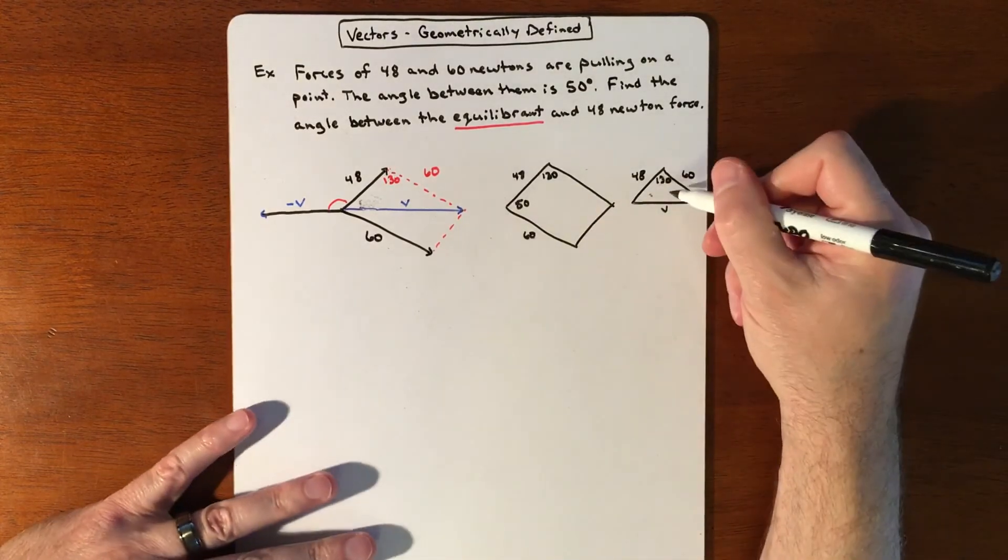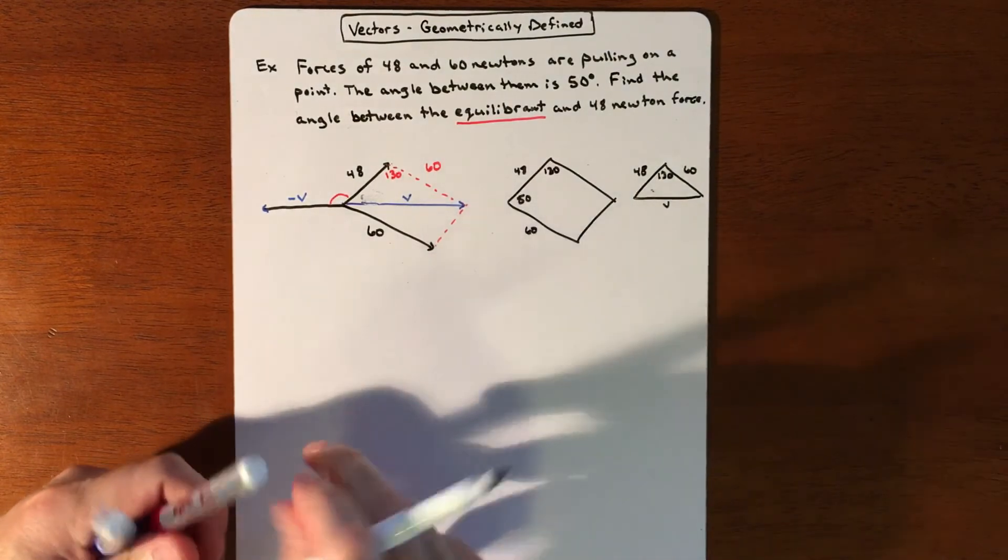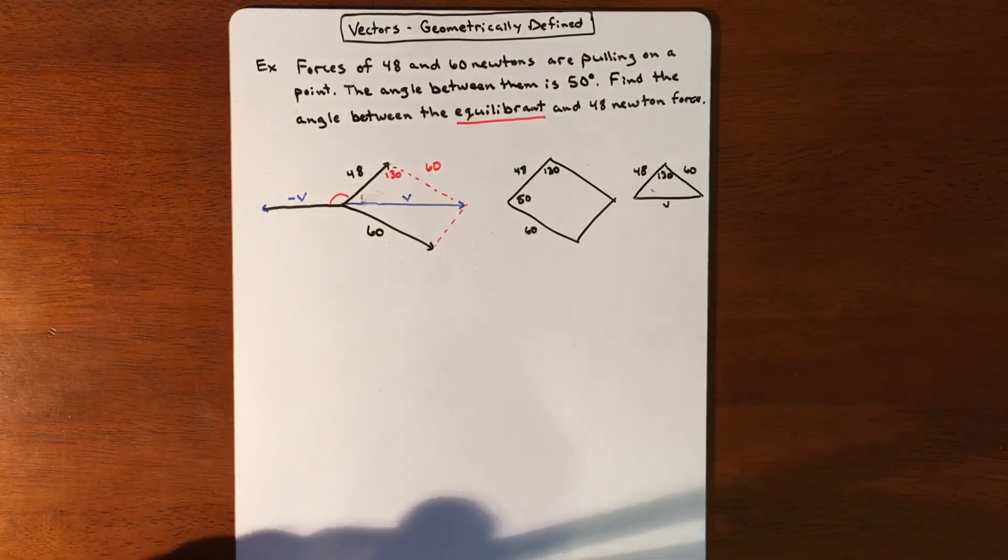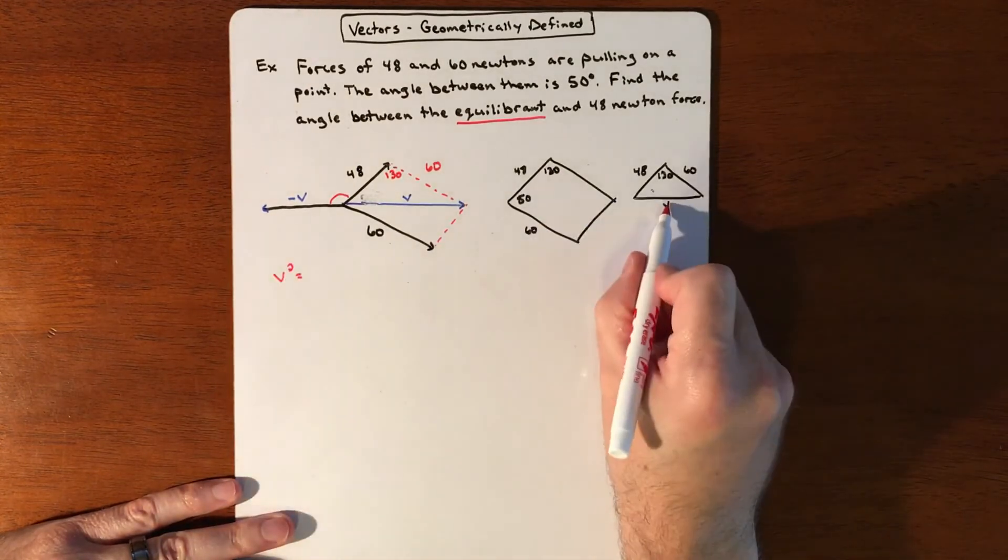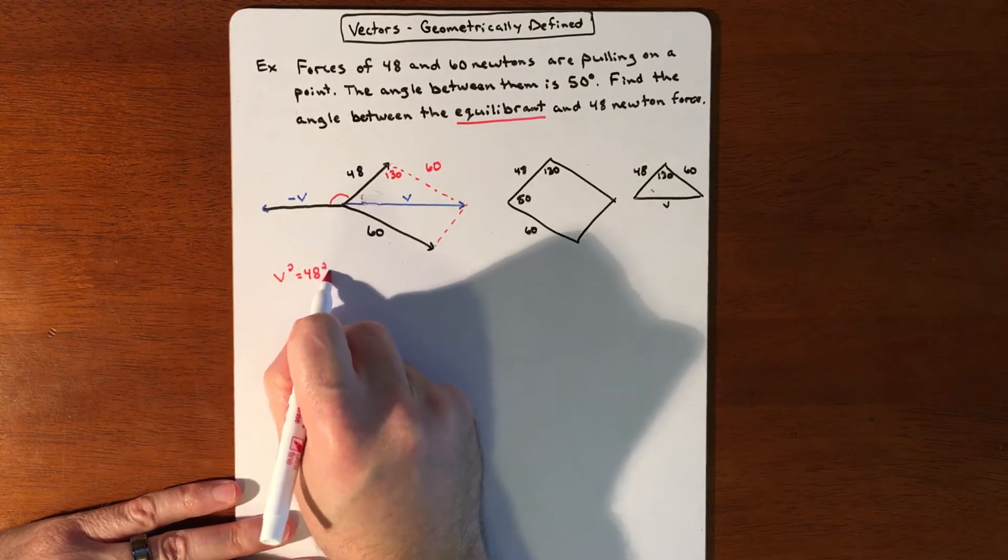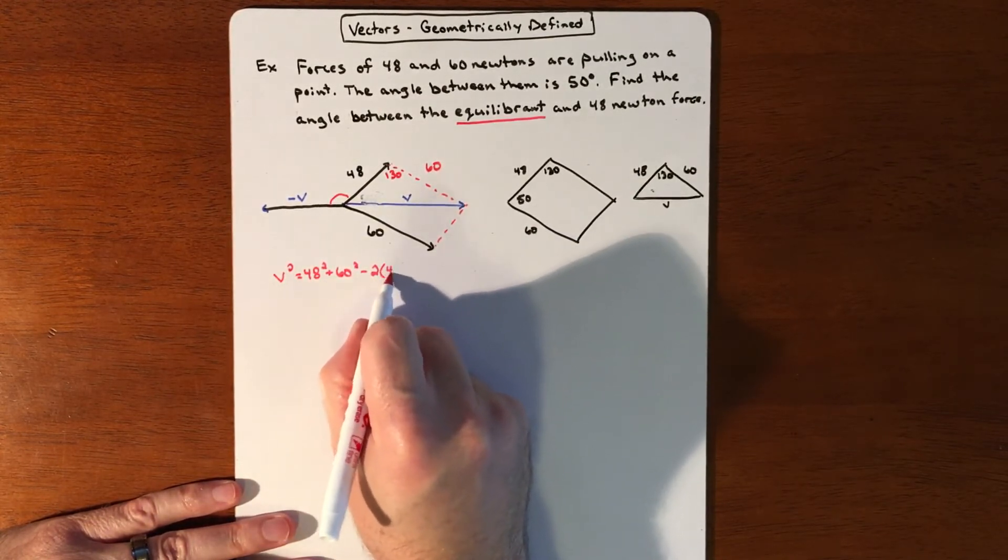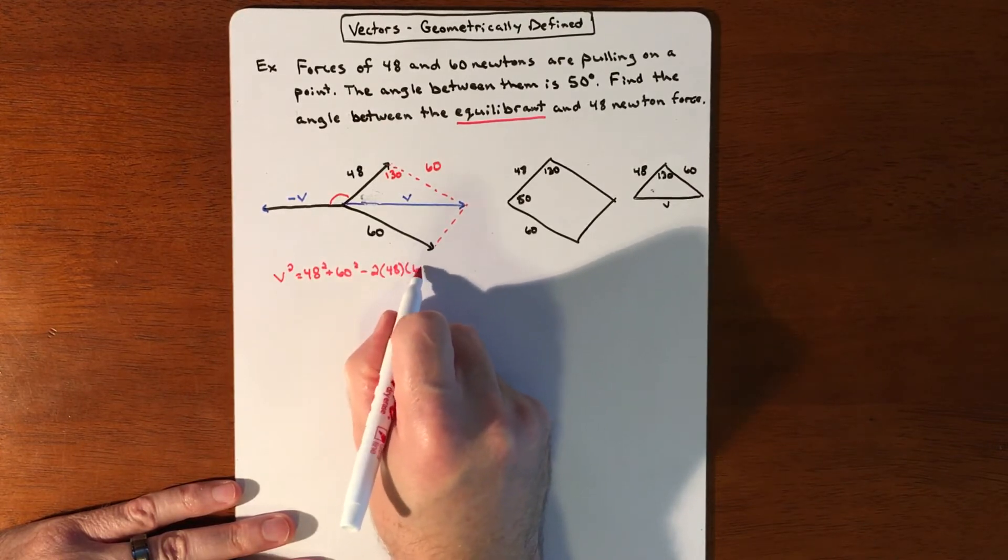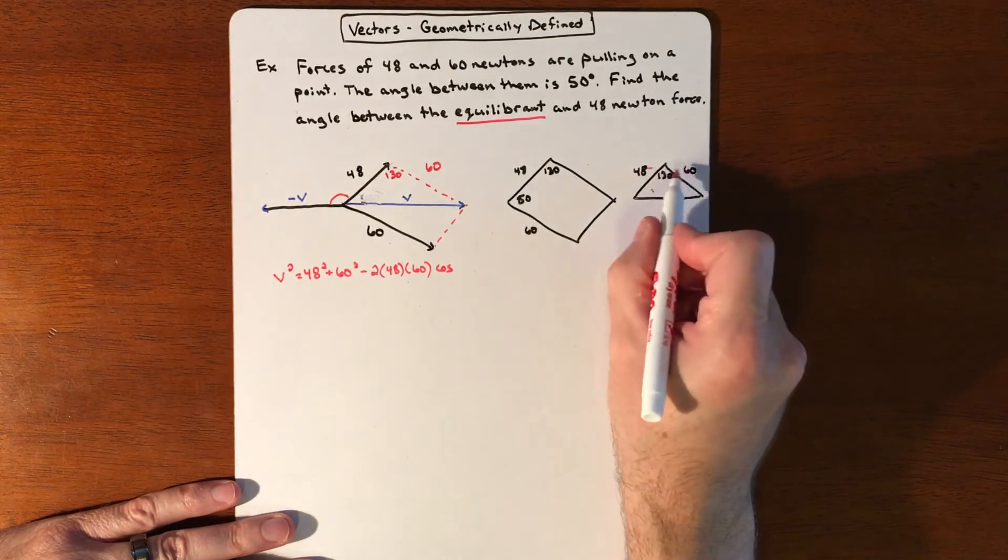So first thing is I'm going to use law of cosines. So I'm going to have V squared. Let me do this in red. So we have V squared is going to equal 48 squared, if we use law of cosines, plus 60 squared minus two times them, 48 times 60 times cosine of the angle in between them.